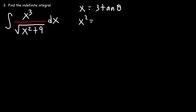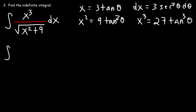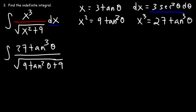With x equal to 3 tan theta, x squared is 9 tan squared theta, and dx is 3 secant squared theta d theta. We also need x cubed, which equals 27 tangent to the third power. Now we replace x cubed with 27 tan cubed, x squared plus 9 becomes 9 tan squared theta plus 9, and dx becomes 3 secant squared theta d theta.